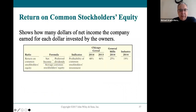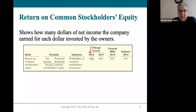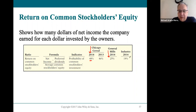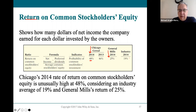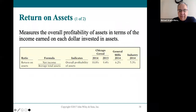For profitability, return on common stockholders' equity is net income minus preferred dividends — usually zero — divided by average common stockholders' equity. Chicago Cereal's return is 48%, which is outstanding — phenomenal compared to General Mills at 25% and the industry at 19%. Chicago Cereal is providing a huge return to its shareholders. As the book notes, it's unusually high — like hitting a grand slam.